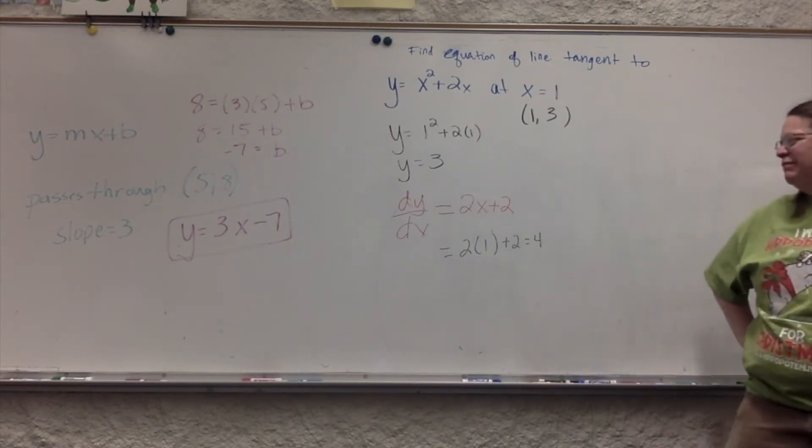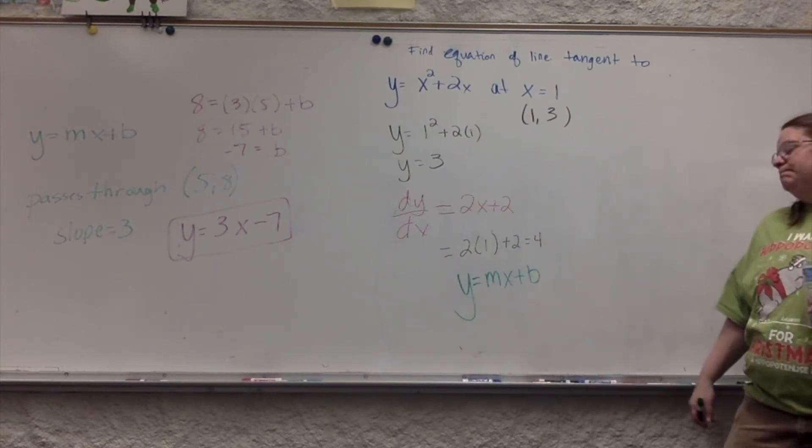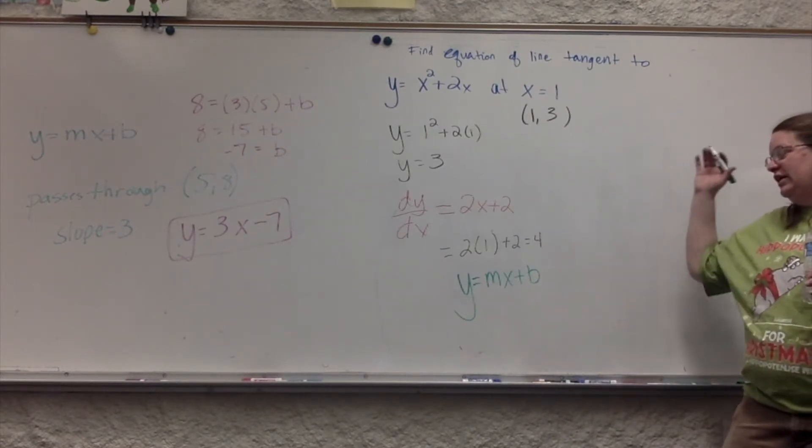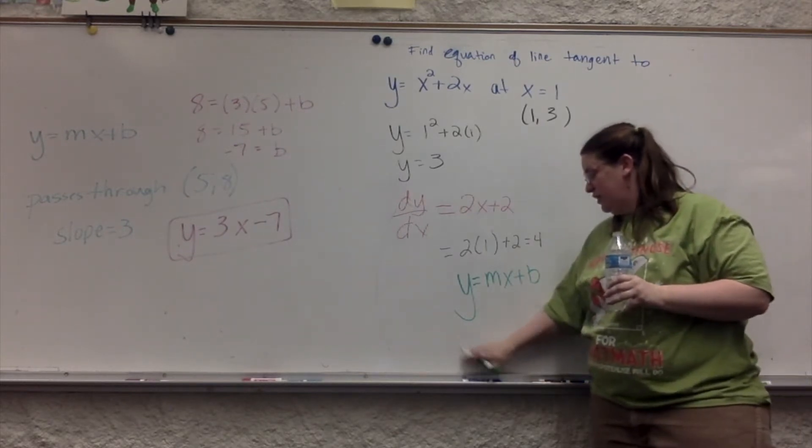You have this y equals x squared plus 2x. So the derivative of this equals 2x plus 2. So remember, that's the slope anywhere. And that's mostly what we have been doing, is just do the derivative. But now, when x equals 1, the slope at that particular place is 4.